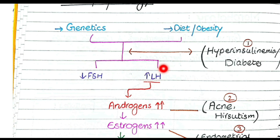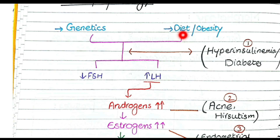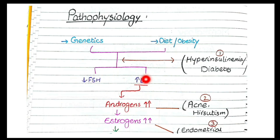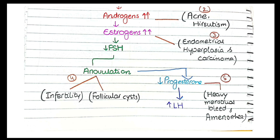The first hormonal disturbance in polycystic ovarian syndrome is a decrease in FSH and an increase in LH, so the FSH to LH ratio is overall decreased. This cannot be fully explained by genetics and diet or obesity alone — as you progress through this cycle, the cycle itself results in decreased FSH and increased LH, making this disorder self-propagating.